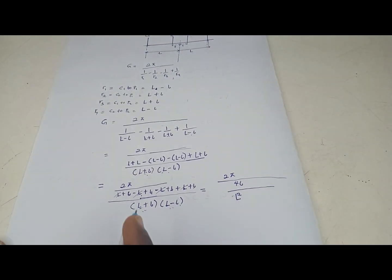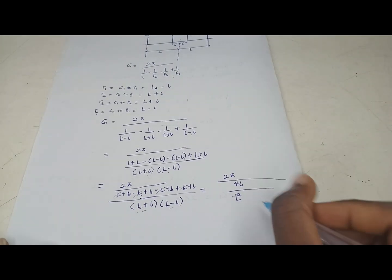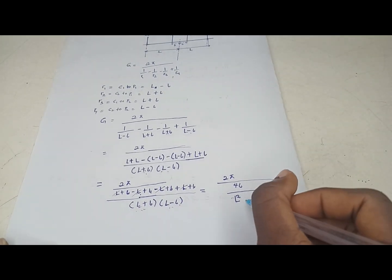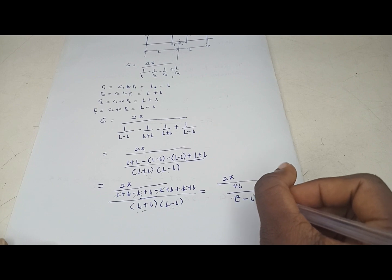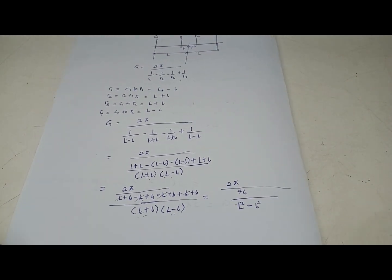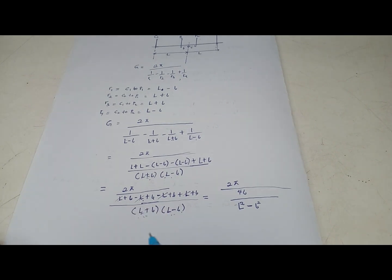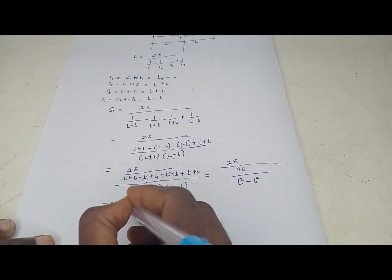Looking at the denominator, we can see it is a difference of two squares: (L + l)(L - l) = L² minus l².